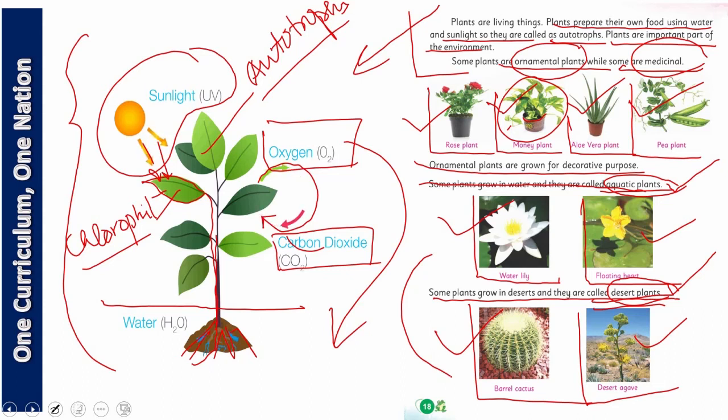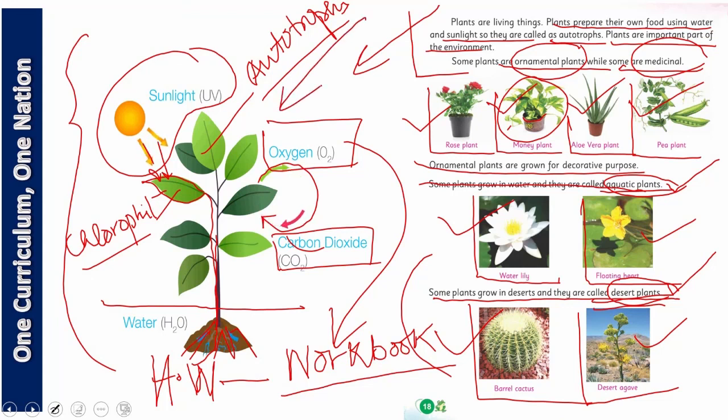So dear children, I am very much sure that you have learned this concept. And now the time has come for your homework. So for homework, what do you have to do? You have to open the workbook and in the workbook there are many activities related to these plants and their autotrophic nature. You have to do these activities in the summer pack and also in the workbook. So best of luck, my dear students. Allah hafiz.